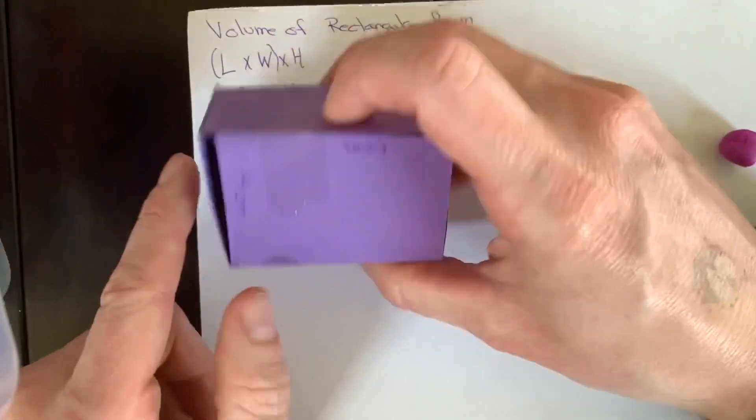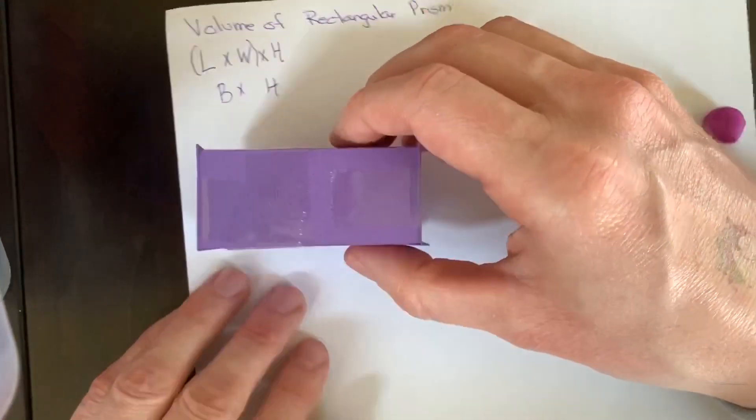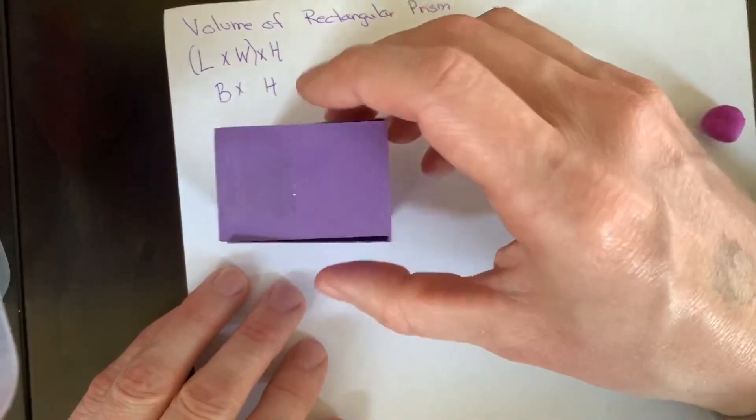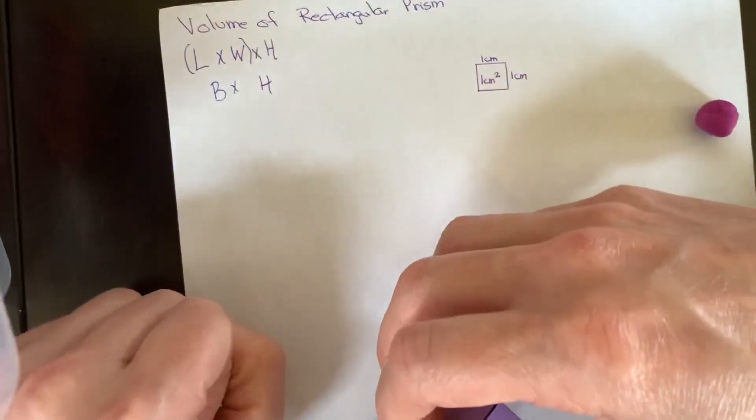In a rectangular prism, it does not matter where the base is. Other prisms it does, but rectangular, anything can be the base. And then we times it by height.